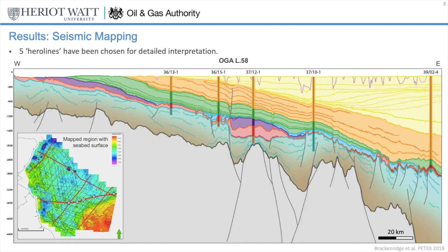Five lines have been chosen for more detailed interpretation and the production of geoseismic or hero lines. These are designed to be printed out large-scale and placed on a map table so that they can promote discussion between subsurface teams exploring in the region. This example, which is a west-east section, shows the dramatic Tertiary progradation from the east and the sub-cropping of strata on the seabed to the west.